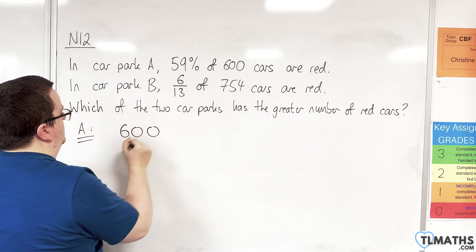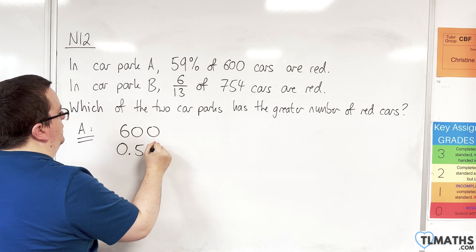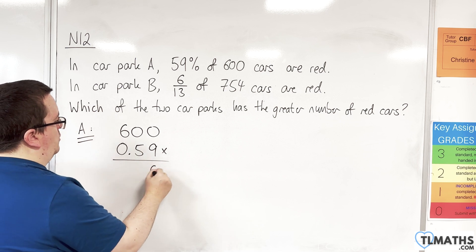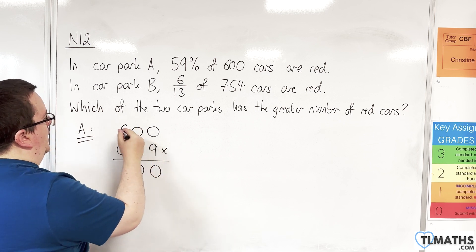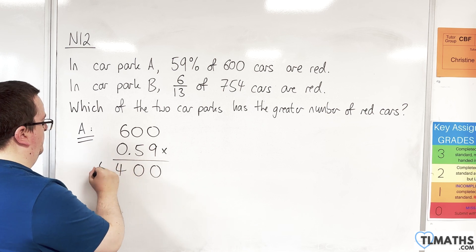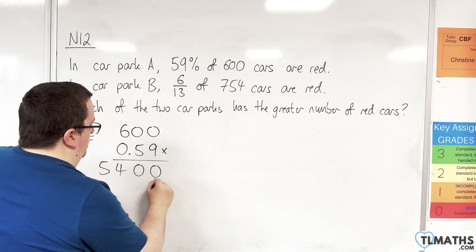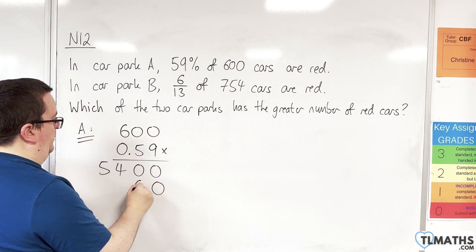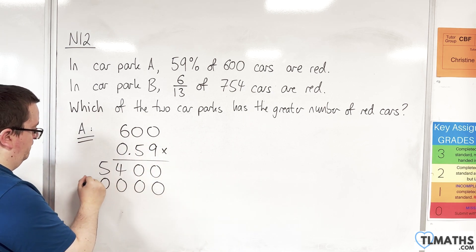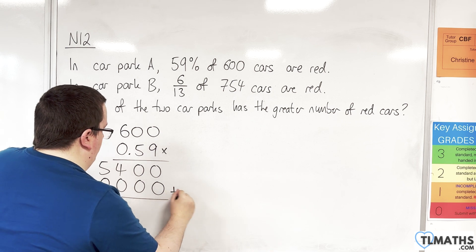600 times by 0.59. 9 times 0, 9 times 0, and then 6 times 9 is 54. Bring in a 0, 5 zeros, 5 zeros, 5 sixes, 30.